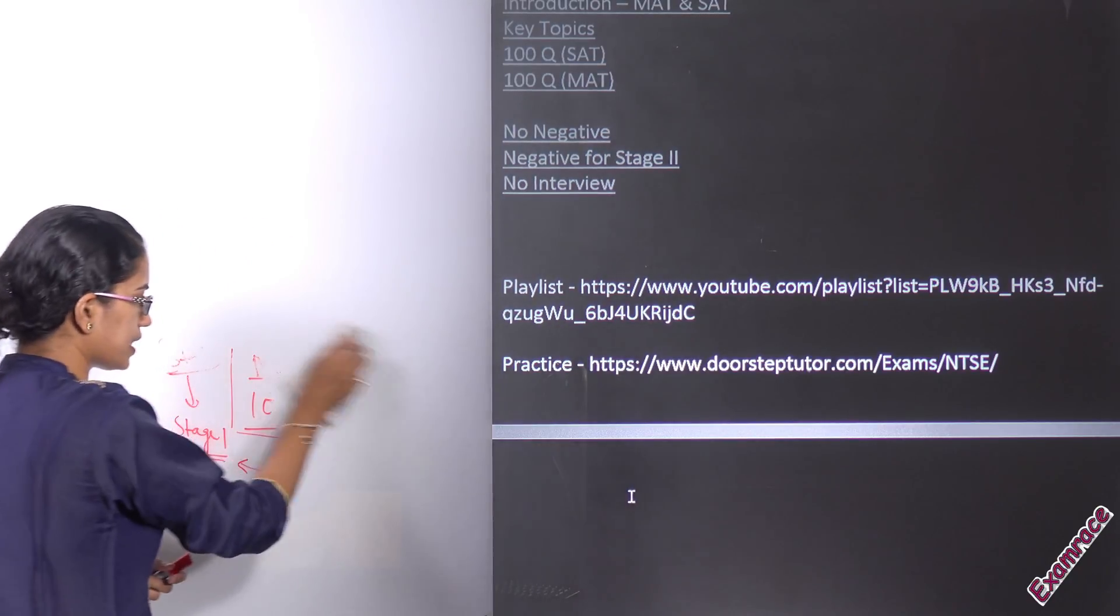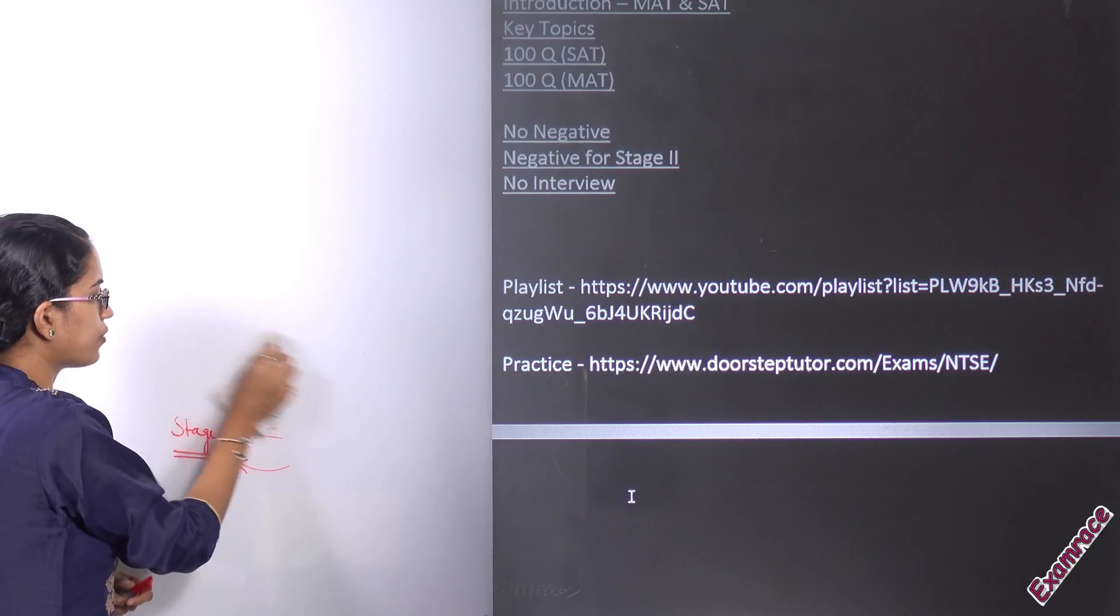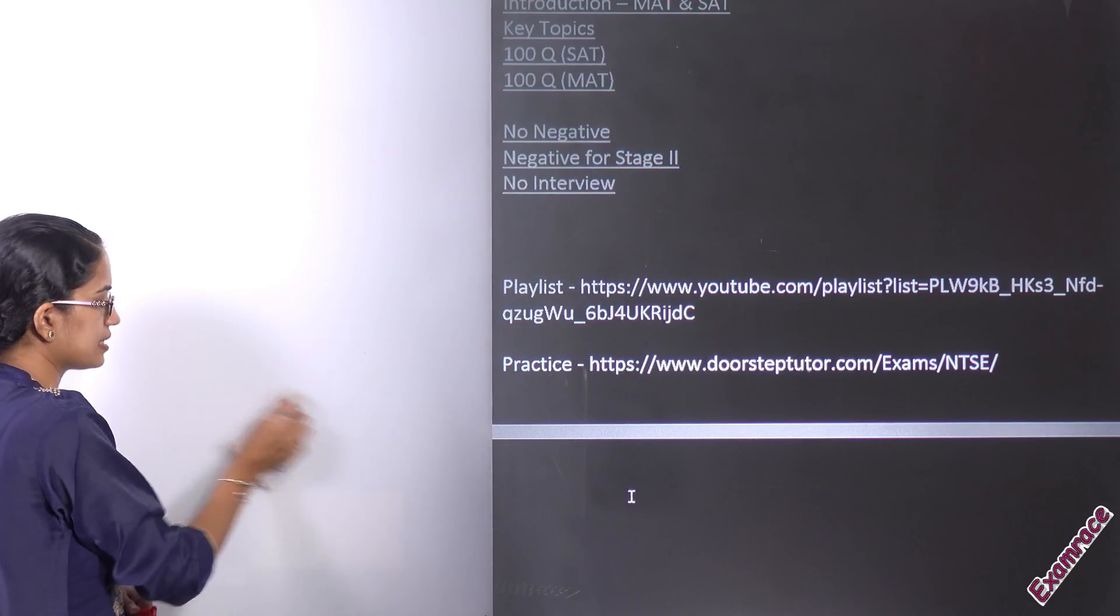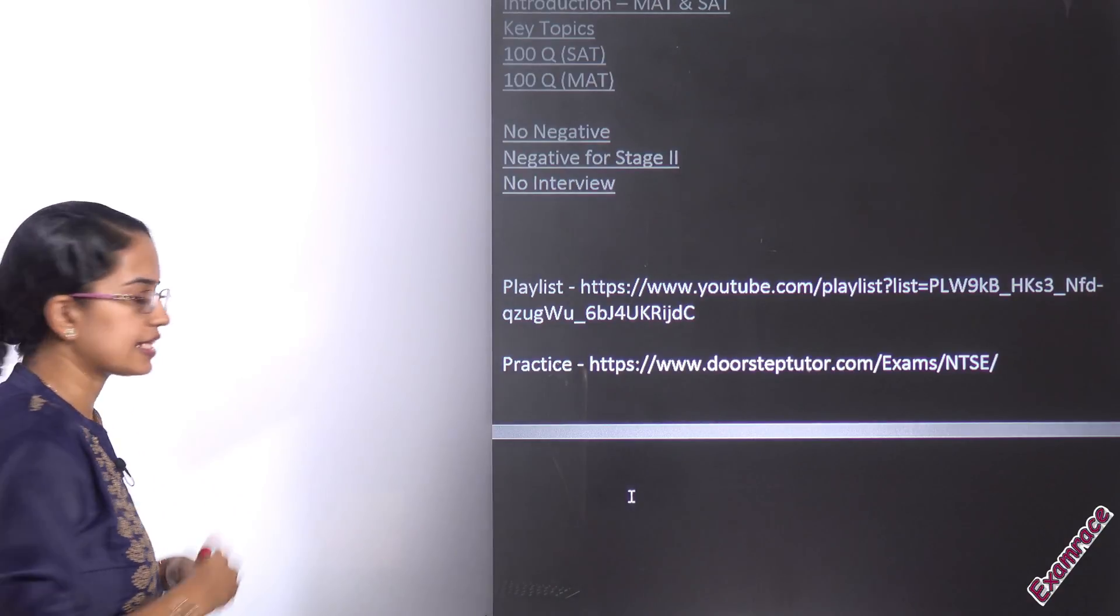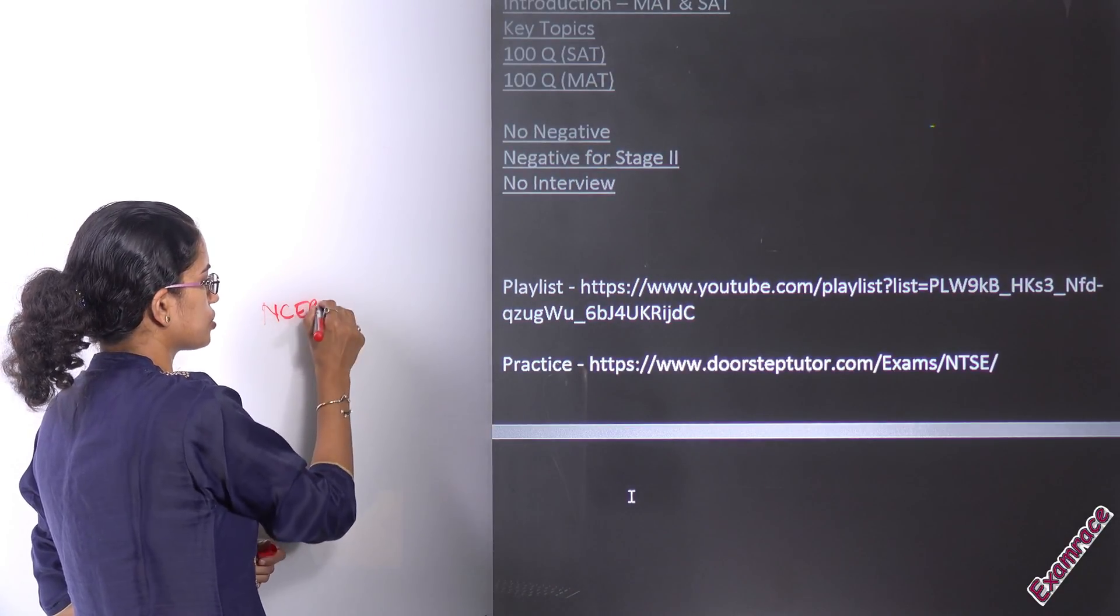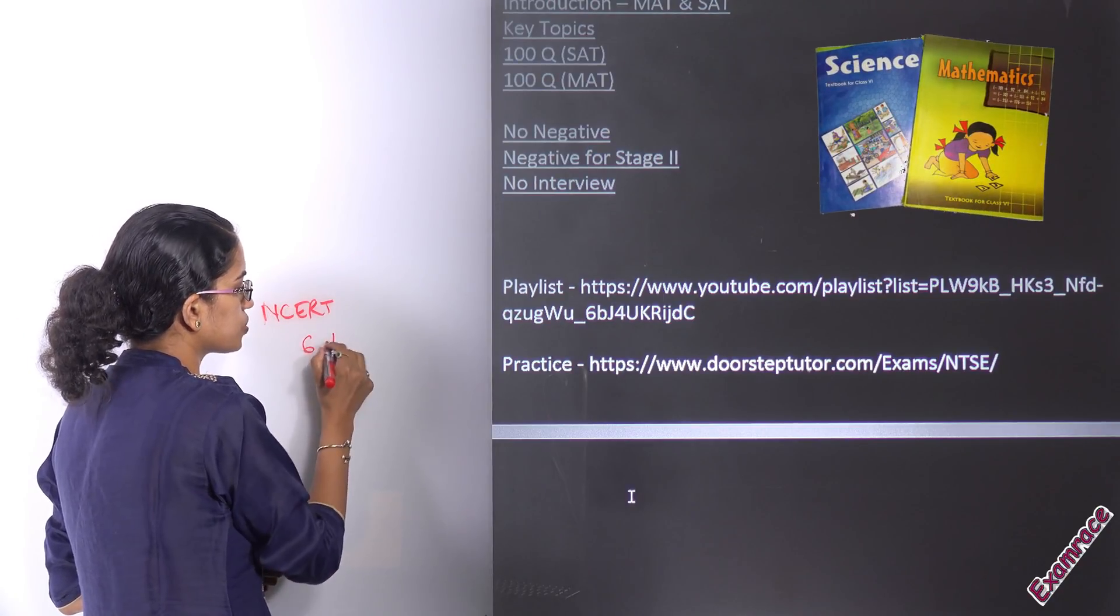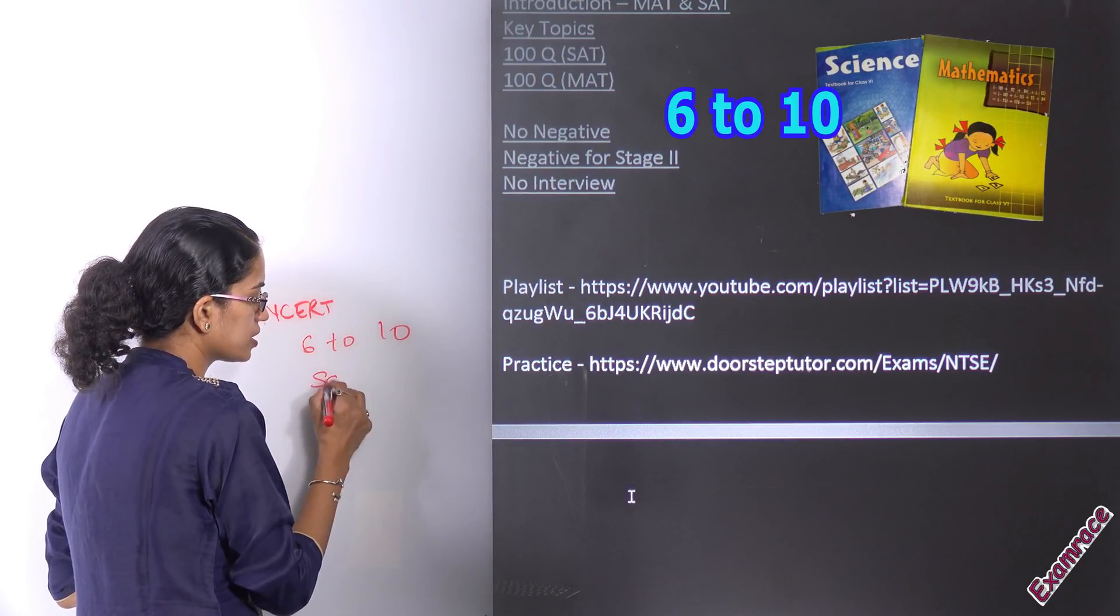The conceptual clarity for ninth and tenth - what we recommend is NCERT should be covered from sixth to tenth for both science and social science.